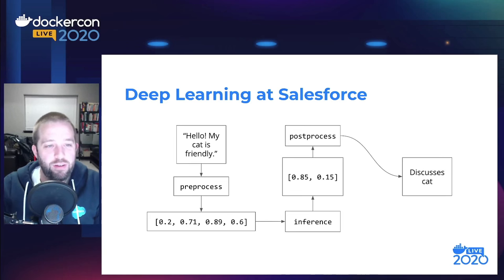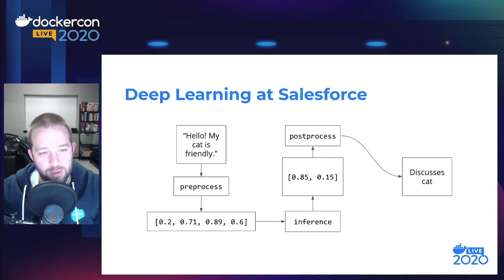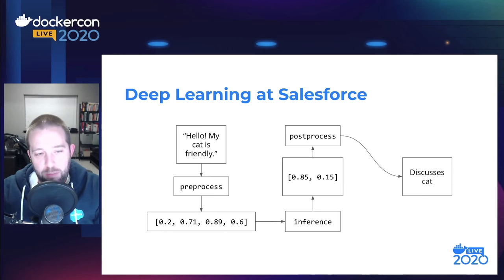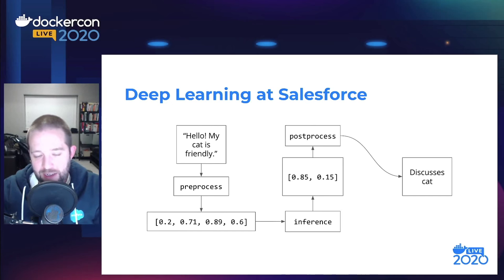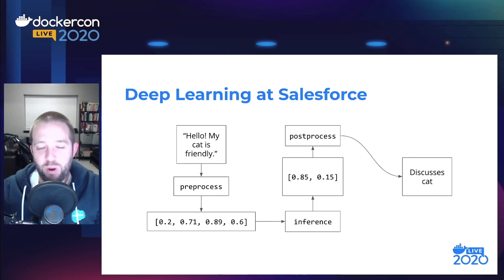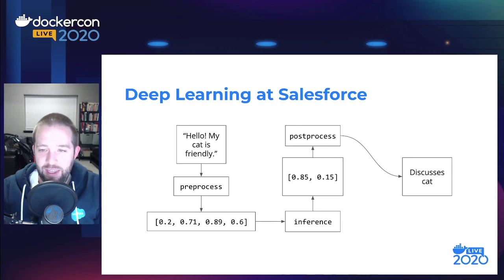Here we have a data flow diagram of this process. The input — 'Hello, my cat is friendly' — is sent into the pre-process stage, which returns a vector of four numbers called an embedding vector. This is part of natural language processing; many NLP neural networks use embedding vectors as input. We pre-process it into that format, feed it into the neural network, and the neural network spits out two numbers — 0.85 and 0.15. We have no clue what those mean until we feed them into the post-process stage, which tells us the neural network is saying this sentence discusses a cat.